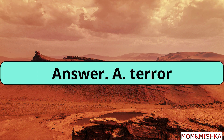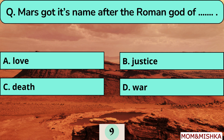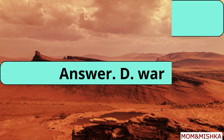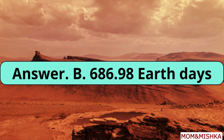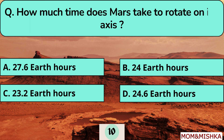Mars got its name after the Roman god of war. Mars takes 686.98 Earth days to orbit the Sun, which means one year on Mars is approximately 687 Earth days.